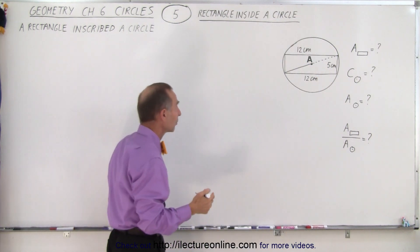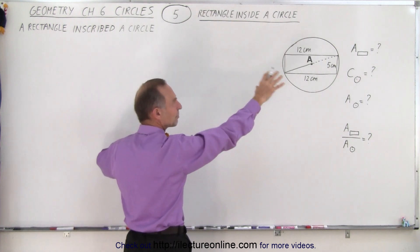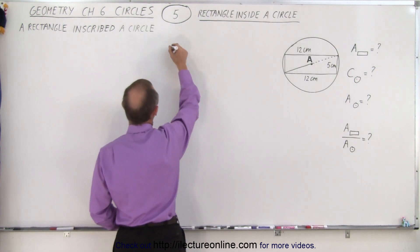Using the Pythagorean theorem, we can say, well, let's hold off on that because let me first find the area of the rectangle. Then we'll continue with that.